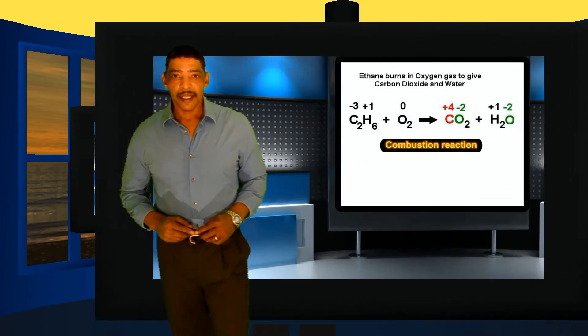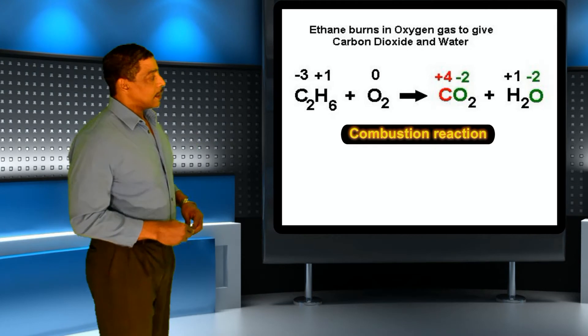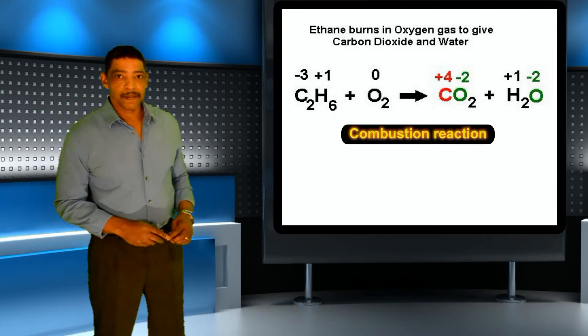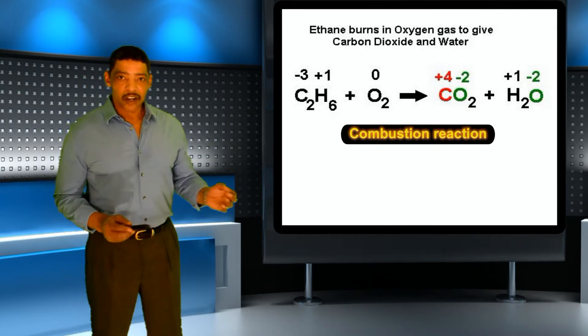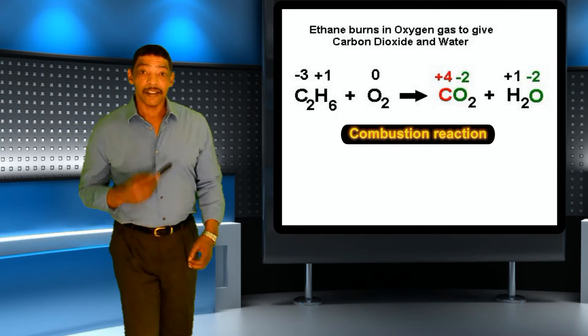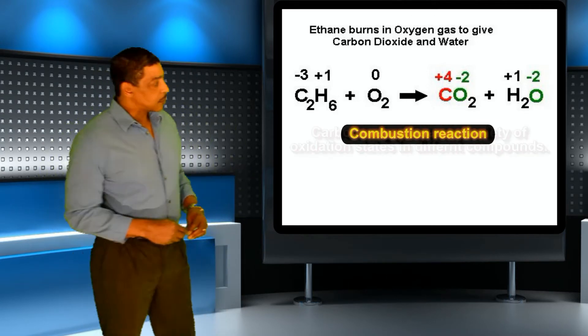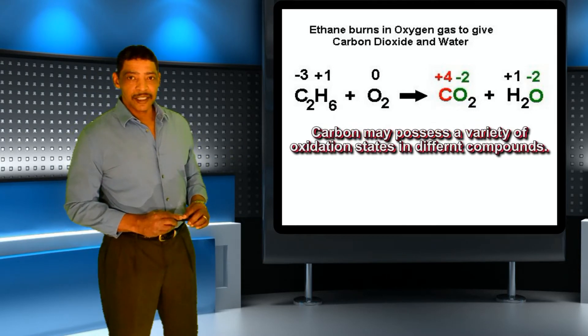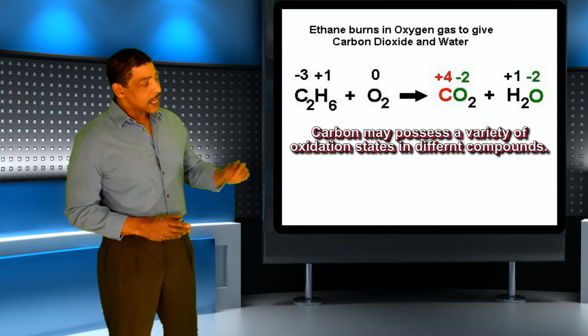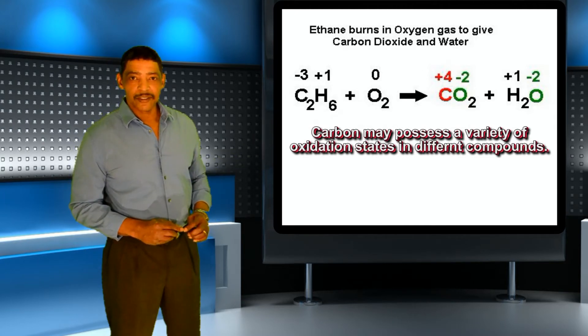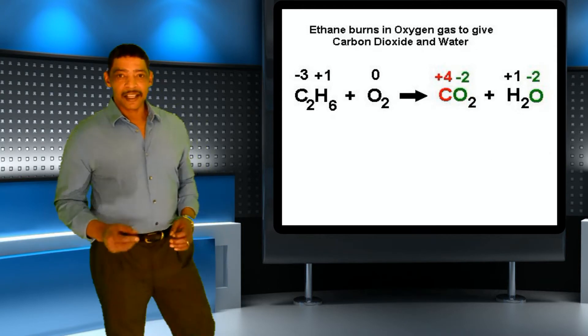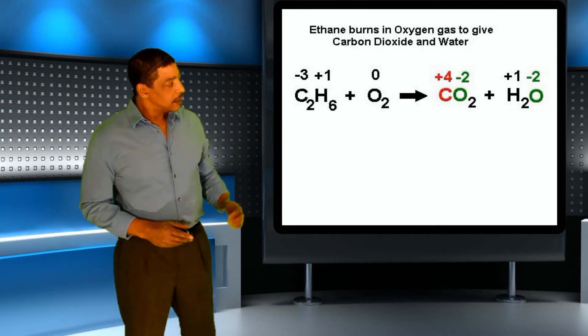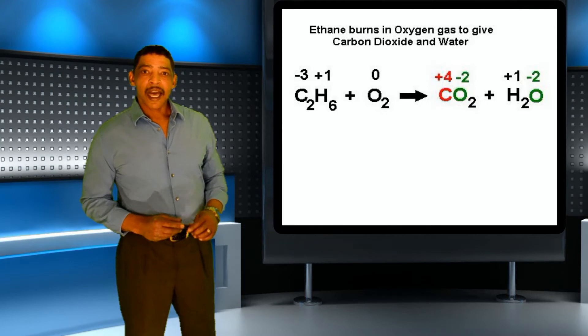Combustion reactions are also examples of oxidation-reduction reactions. In this example, the compound ethane reacts with oxygen to form carbon dioxide and water, a typical combustion reaction. During the process, carbon begins with a negative three oxidation state, hydrogen begins with a plus one oxidation state, and the element oxygen will possess a zero oxidation state.